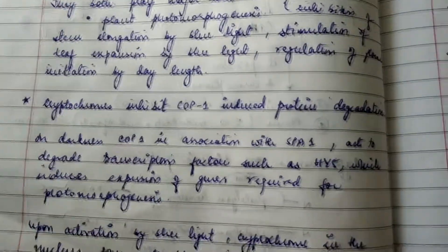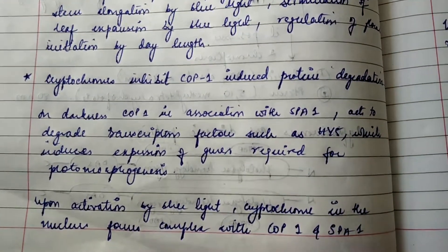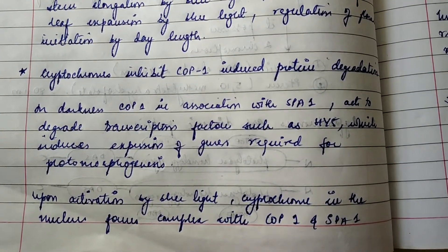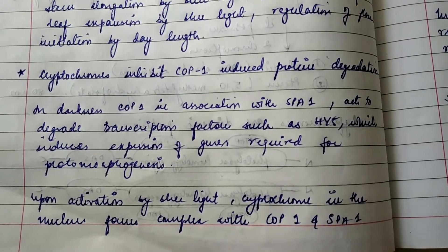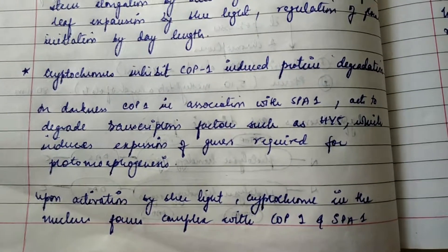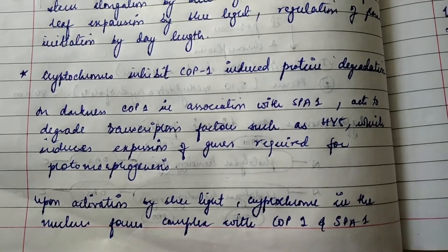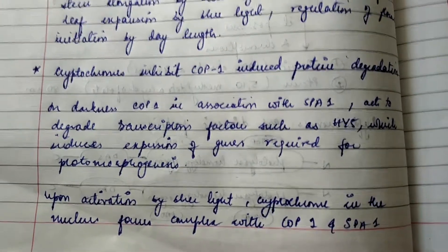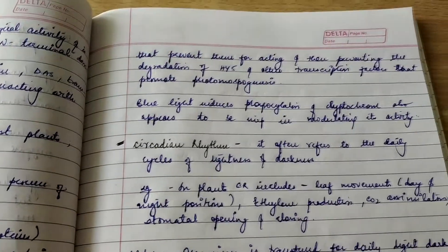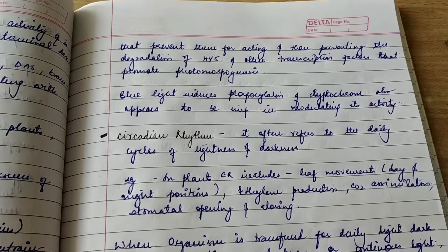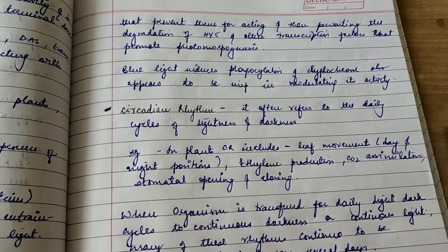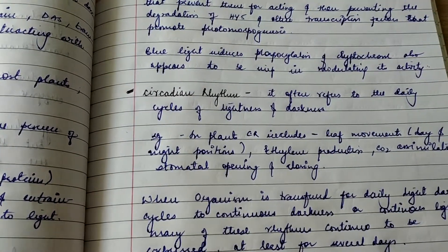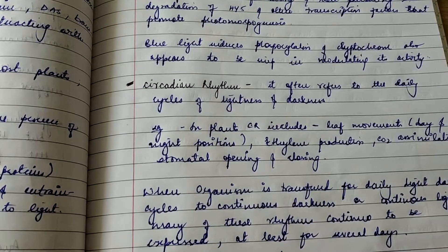Cryptochromes inhibit COP1-induced protein degradation in darkness. COP1, associated with SPA1, degrades transcription factors such as HY5, which induces expression of genes required for photomorphogenesis. Upon blue-light activation, the cryptochrome in the nucleus forms a complex with COP1/SPA1, preventing them from acting and thus preventing the degradation of HY5 and other transcription factors that promote photomorphogenesis. Blue light also induces phosphorylation of cryptochrome, which appears important in modulating this activity.